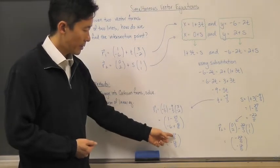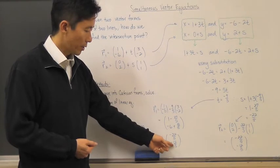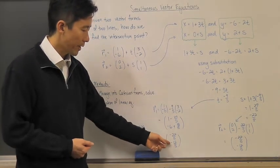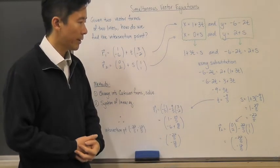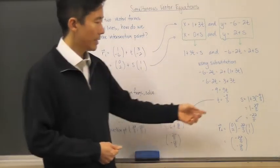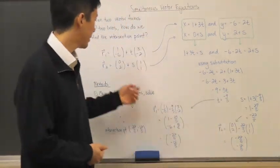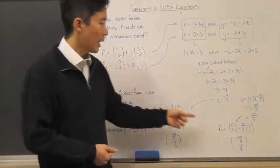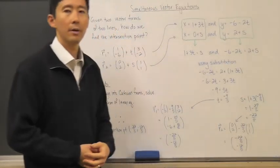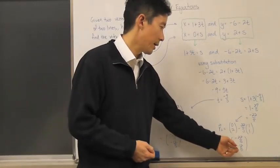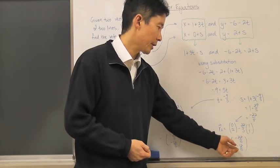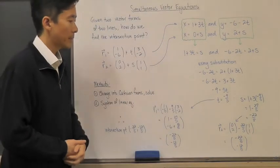So if I do that, notice I come up with -22/5 and -12/5. If I take the parameter s and put it into line 2, I come up with exactly the same point, the exact same vector.